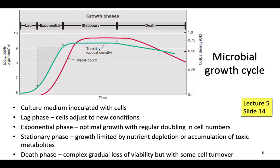This slide is from lecture 5, 'Replicate and Divide,' slide number 14. This slide shows you the typical growth curve of the bacterial population. There are four phases of the microbial growth cycle you need to remember: lag phase, exponential phase, stationary phase, and death phase.